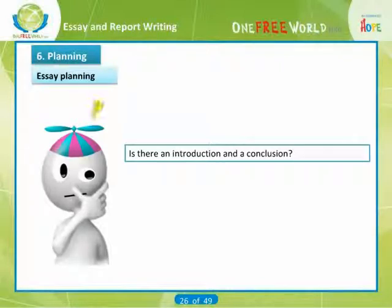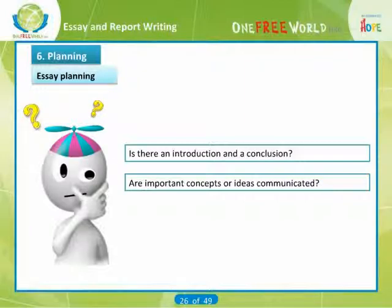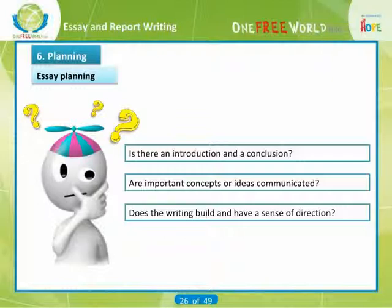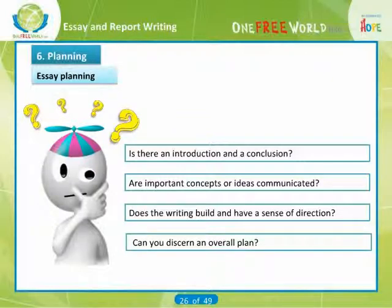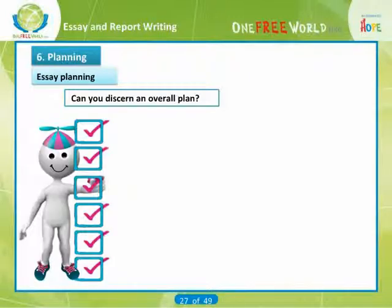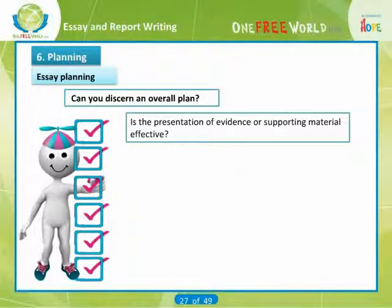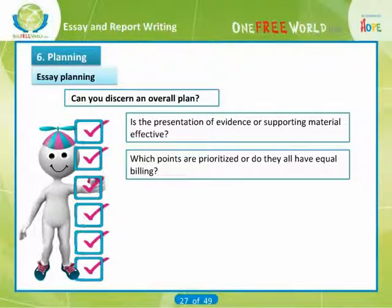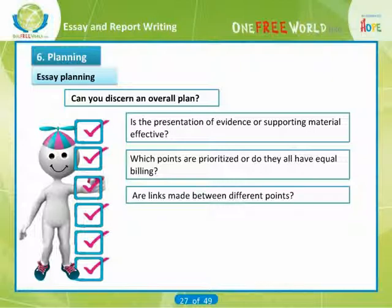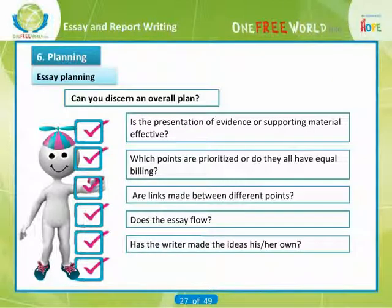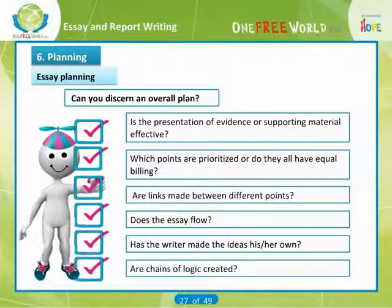When evaluating an essay, ask: Is there an introduction and a conclusion which help to guide the reader? Are important concepts or ideas communicated? Does the writing build and have a sense of direction? Can you discern an overall plan? Is the presentation of evidence or supporting material effective? Which points are prioritized, or do they all have equal billing? Are links made between different points? Does the essay flow? Has the writer made the ideas their own? Are chains of logic created?